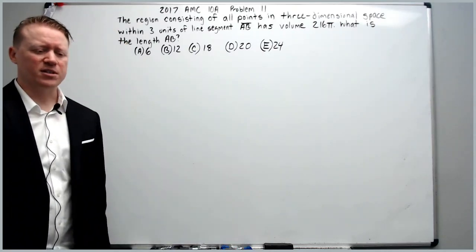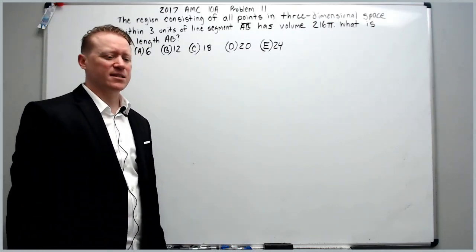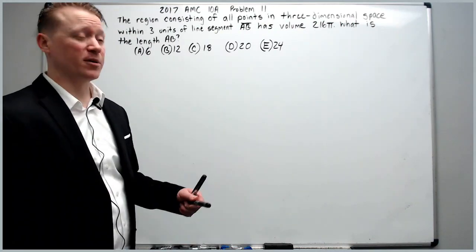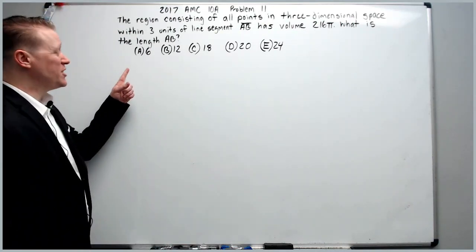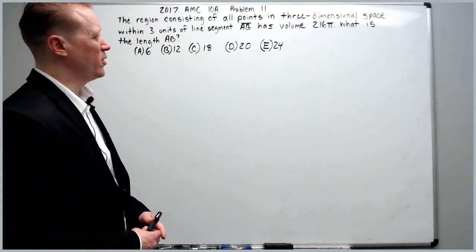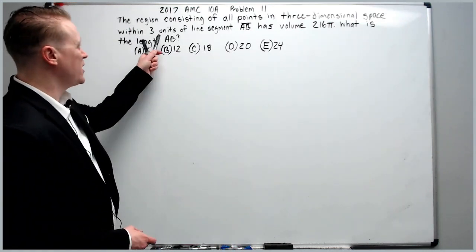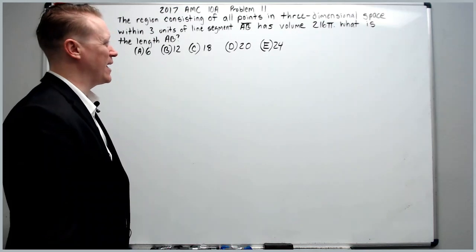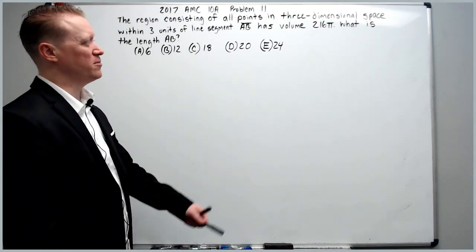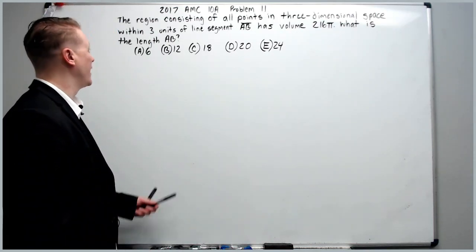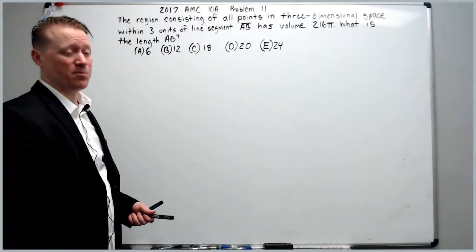Alright, in this problem we'll solve the 2017 AMC 10A problem number 11. The region consisting of all points in three-dimensional space within three units of line segment AB has volume 216π. What is the length AB?